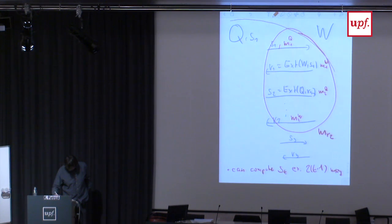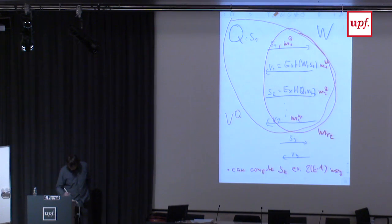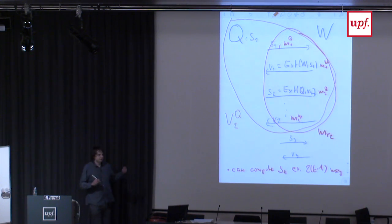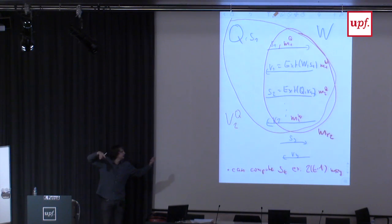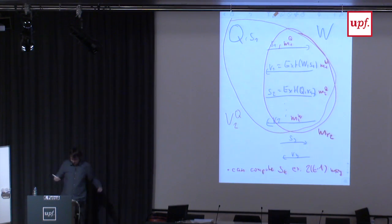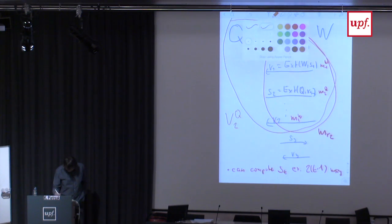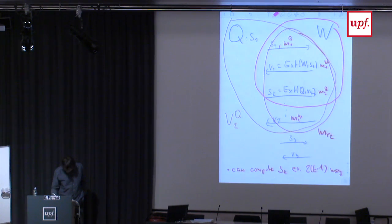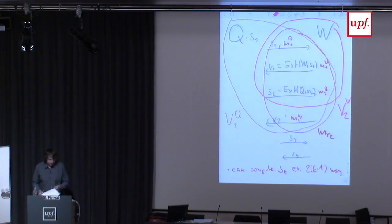Let's call V^Q_i the view of Quentin after receiving the i-th message, and similarly the view of Wendy. V stands for view, Q is the superscript for Quentin, and the subscript is the index after seeing and receiving the i-th message.